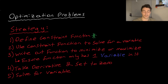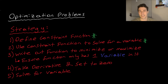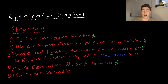We're then going to use this constraint function to solve for a variable — that's the next step. We're then going to write out the function that we're either going to maximize or minimize. Sometimes it'll be minimize the amount of materials needed, or maximize the revenue or profit created. Once we have this function, we're going to take the derivative and set it to zero. This is where the calculus comes in, building upon our previous knowledge of how to maximize or minimize a function — where the slope is equal to zero.